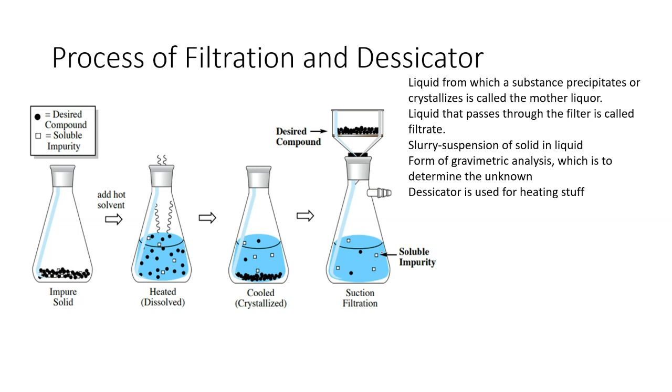Some vocabulary you should know: Liquid from which a substance precipitates or crystallizes is called mother liquor. Liquid that passes through the filter is called filtrate. Slurry is a suspension of solid in a liquid. This entire process of filtration is known as gravimetric analysis, which determines the unknown substance. Typically this is done in organic chemistry. Usually what you'll do is run tests like check its melting point and probably do some TLC (thin layer chromatography) to figure out what substance it is.